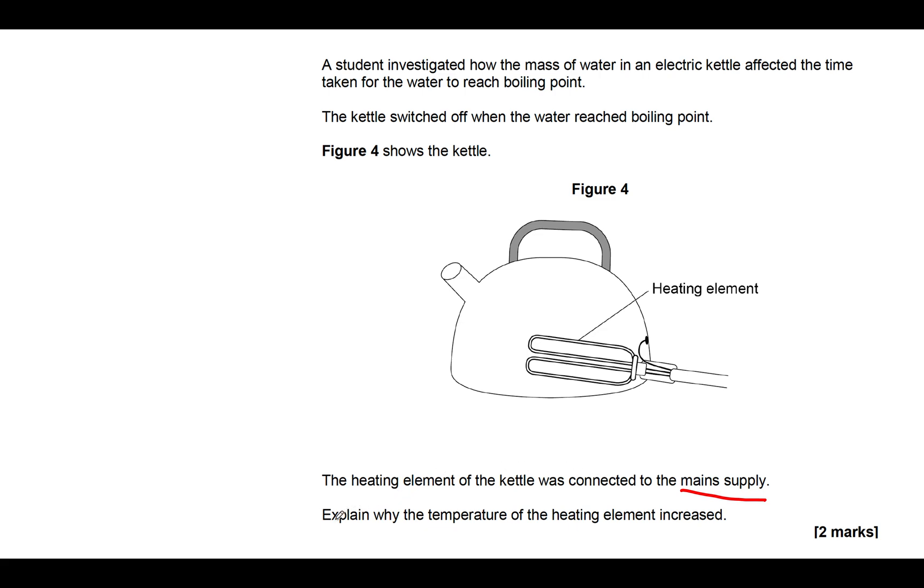It says explain why the temperature of the heating element increased. Explain is a command word which means you've got to give a scientific reason for something, so we expect to see 'because' in the answer. The key points here are that there is a current flowing which is moving electrons, and those moving electrons collide with the particles in the element of the kettle. You can see the heating element is labeled there, so they collide with atoms in the element.